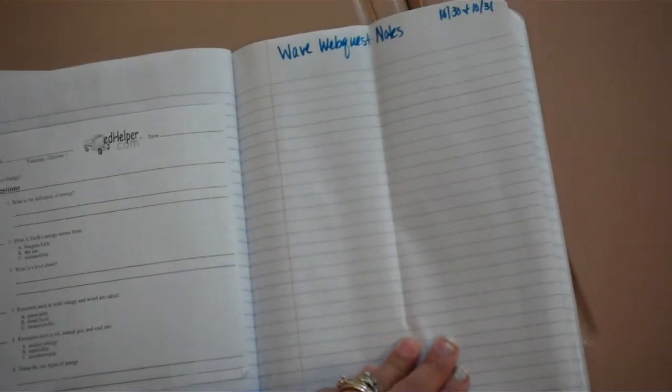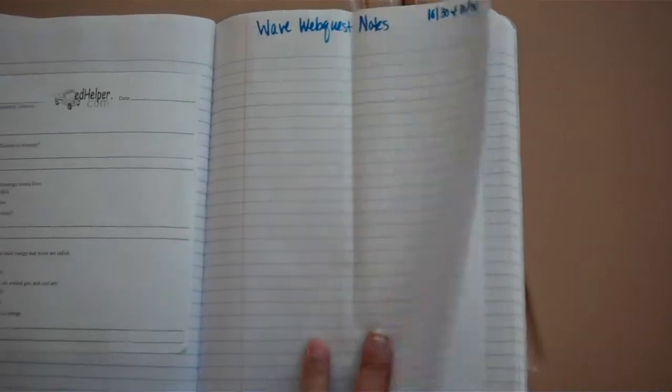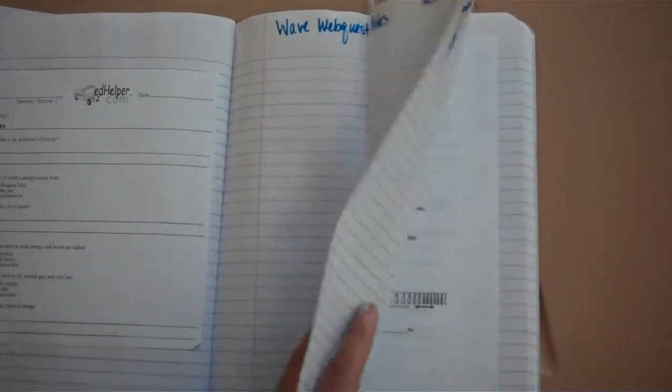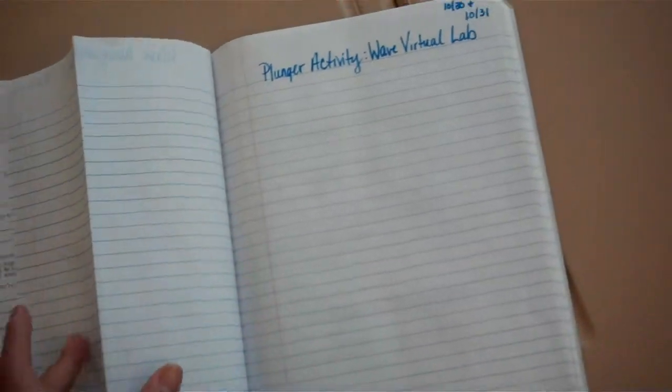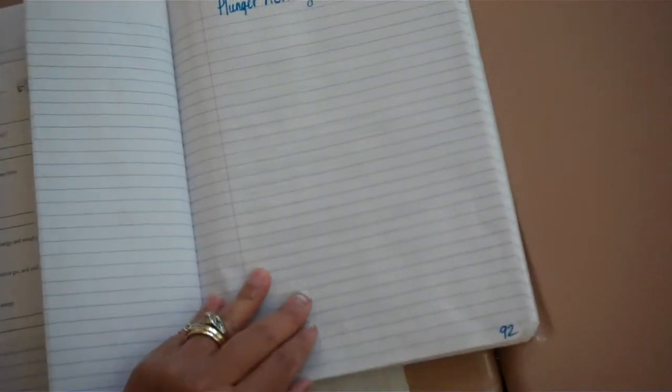The wave web quest that we did in class, we spent three days on this with the laptops, you should have those notes from the Weebly on page 90 and 91, Cornell note format, question on the left, answer on the right. The plunger activity is also on the Weebly and was part of the web quest that you should have on page 92.